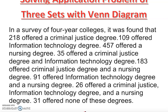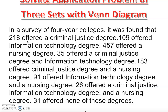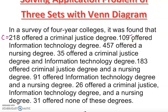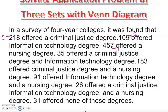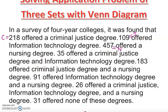In a survey of four-year colleges: 218 offered criminal justice — I'll declare this as set C. 109 offered information technology — I'll call this set I. 457 offered nursing degree — this is my nursing set N. And 35 offered both criminal justice and information technology, so criminal justice intersect information technology equals 35.